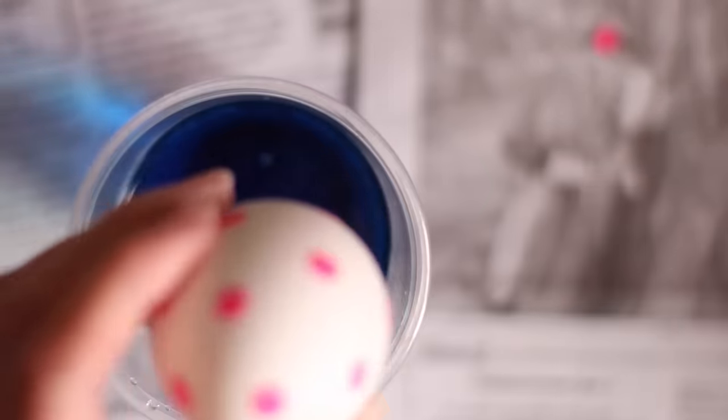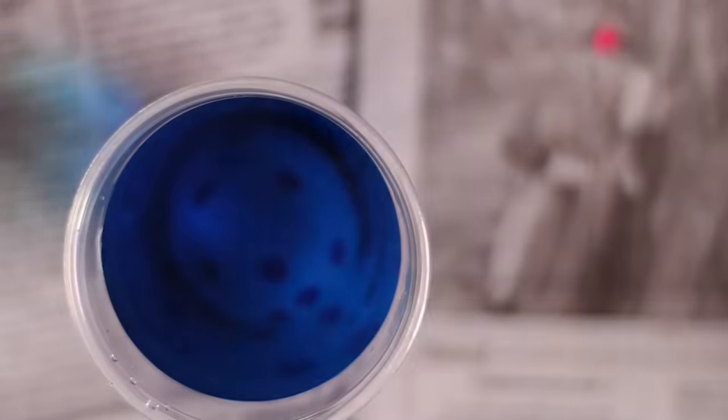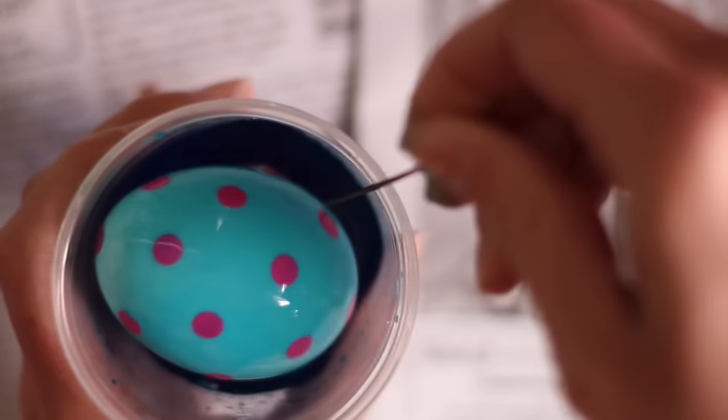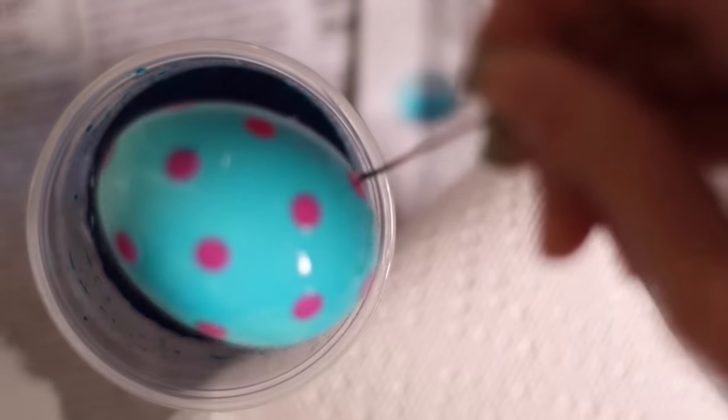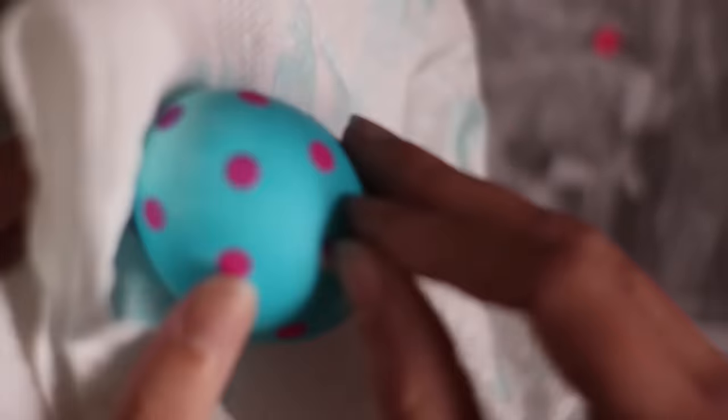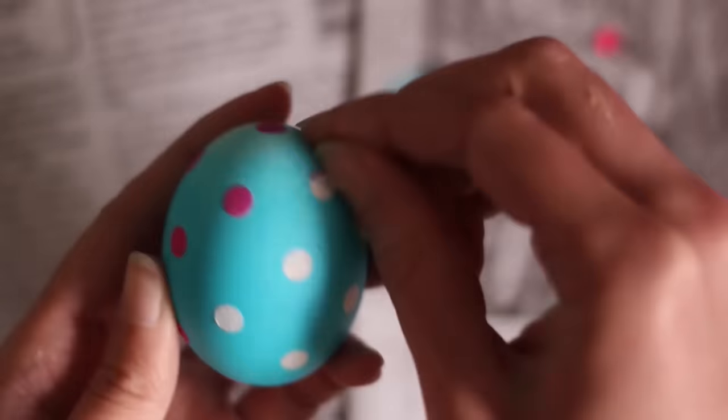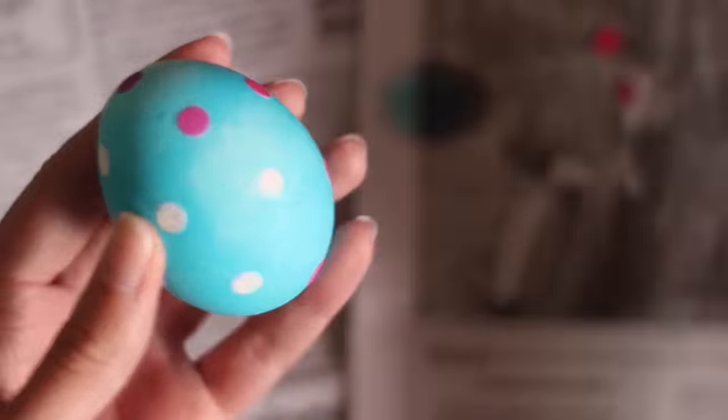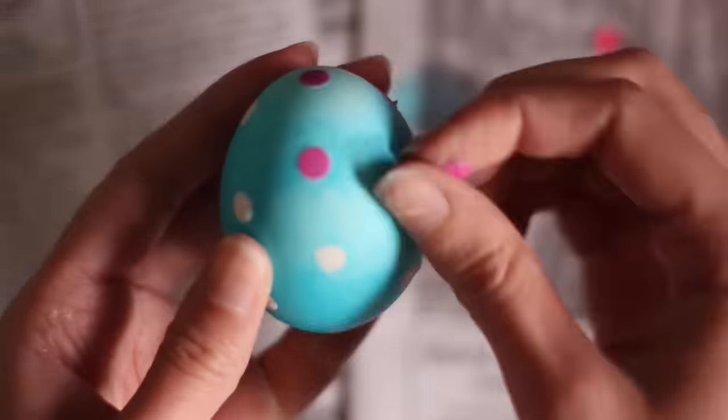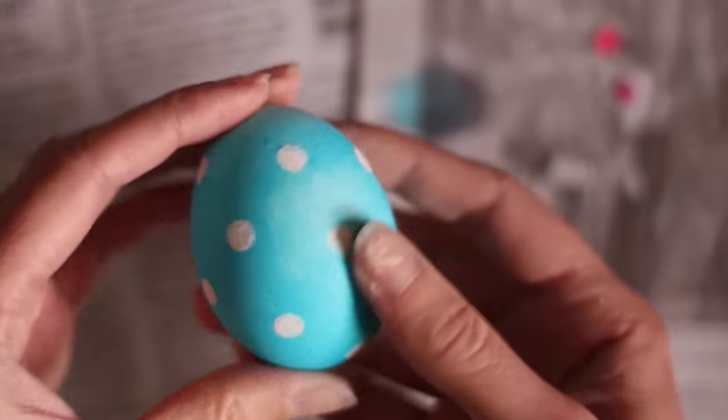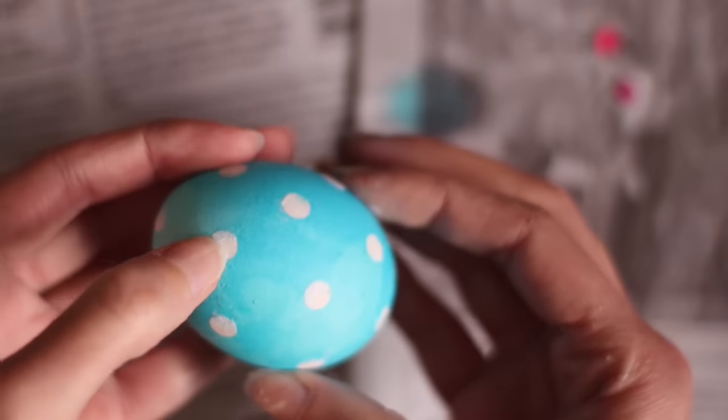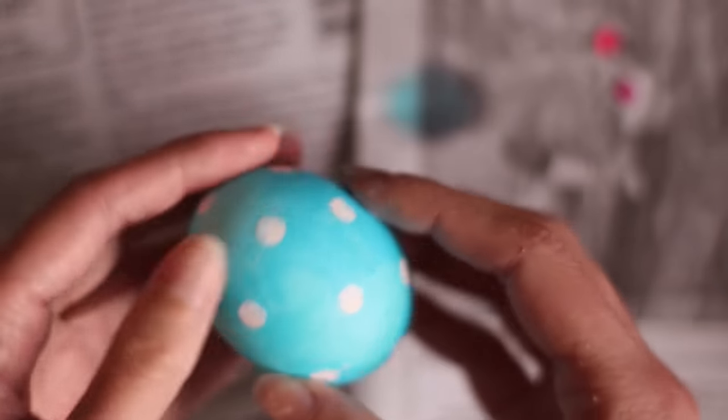And then just put the egg into the dye. Then take the egg out. You're going to want to dry it off. And then just start peeling those stickers off. And you may need to wash the egg a little bit to get the sticky residue off. But you end up with a polka dotted egg. And that's it for trick number two.